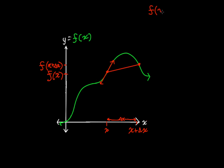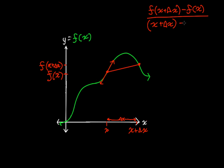We can write that out as: f(x + Δx) minus f(x), over (x + Δx) minus x. This is our slope — the slope of the secant line, which is important to label as the secant line.